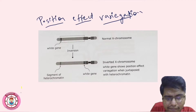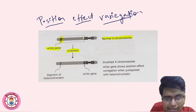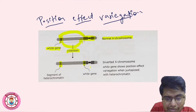This is the white gene, present near the telomere — the end of the chromosome — on the normal X chromosome. Now there is inversion taking place. After inversion, this gene gets shifted here, into what is known as the heterochromatin region. The heterochromatin goes there, and this gene comes here. So this is a segment of heterochromatin, and this is the white gene. Now, due to this change in the position of the gene, the white gene gets suppressed, or we can say inactivated, and we see a different type of phenotype.